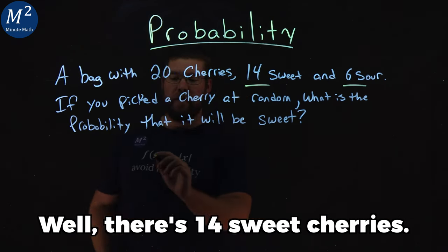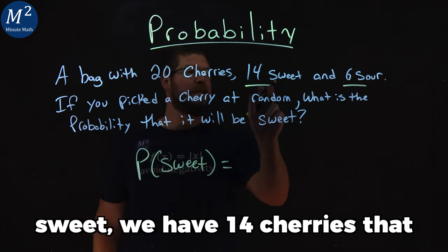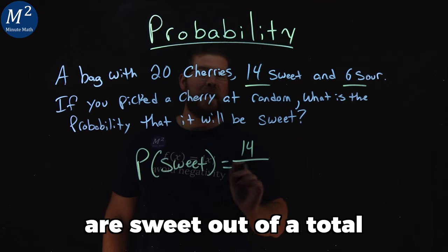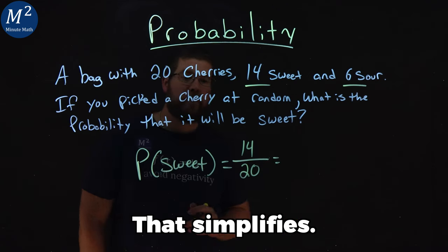Well, there are 14 sweet cherries. So the probability of it being sweet—we have 14 cherries that are sweet out of a total number of cherries of 20. That simplifies.